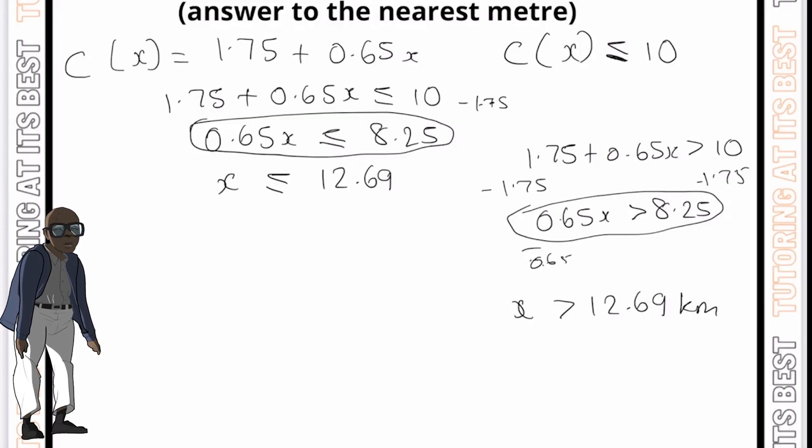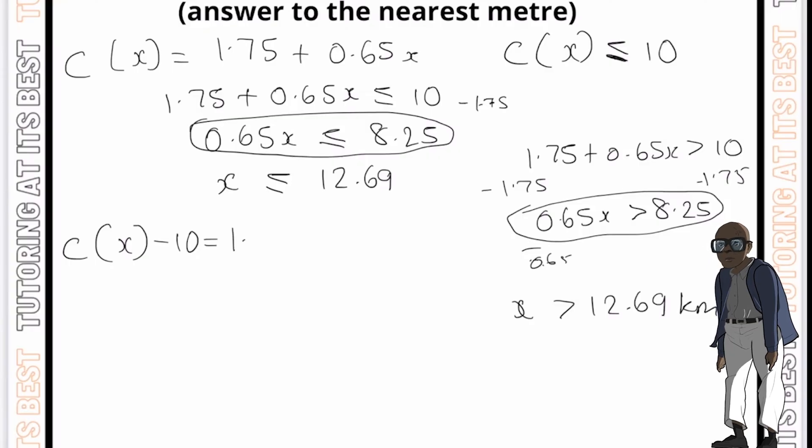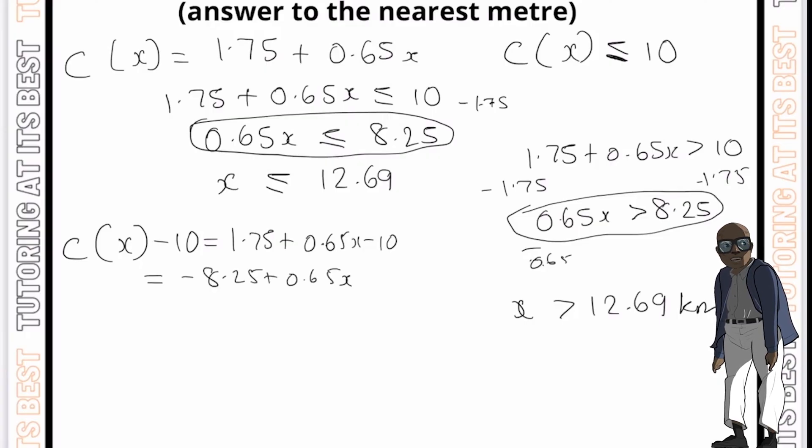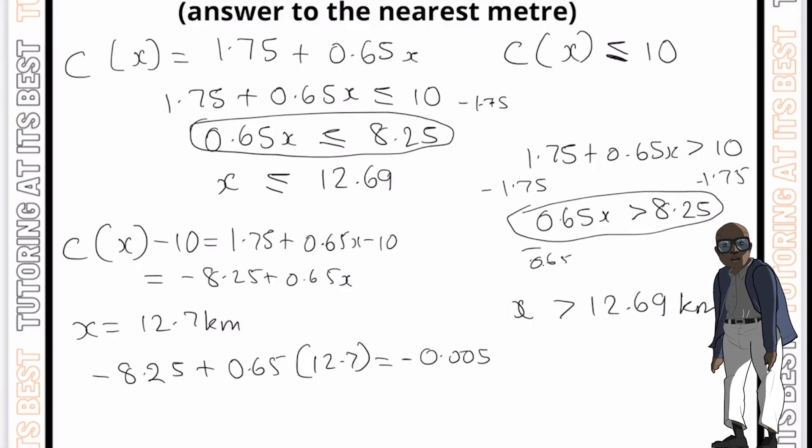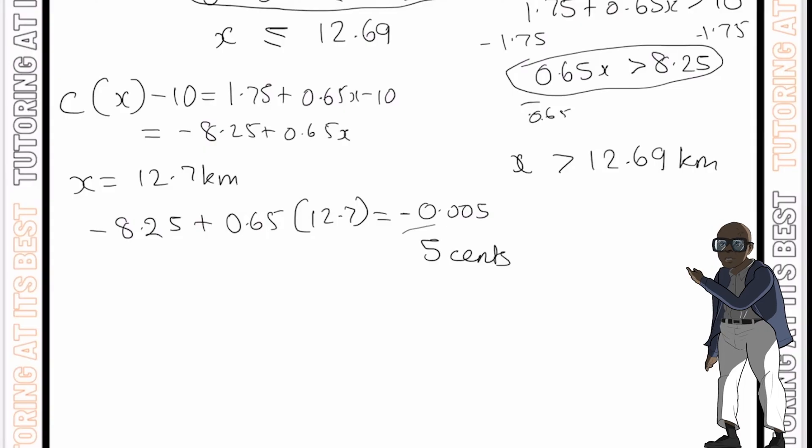Therefore, if Katie lives between 12.69 and 14 kilometers, she won't have enough money to pay for the ride home. So let's now go ahead and work out the difference between the cost of the ride and her available funds. So again, we'll take the cost and label it as x, and that will be minus 10, which equals 1.75 plus 0.65x minus 10. And as we saw earlier, it equals minus 8.25 plus 0.65. So for x now being 12.7 kilometers, what does this come up to? Well, let's substitute it. So we've got 8.25 plus 0.65 and in brackets, we can put down 12.7 and that equals to minus 0.005. So therefore, Katie will be short by approximately 5.1 cents. We can say 5 cents and there we are.